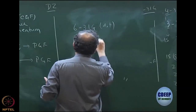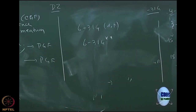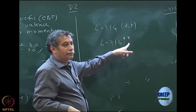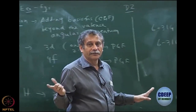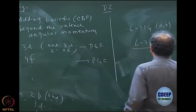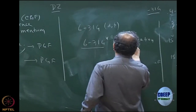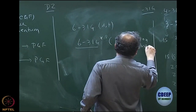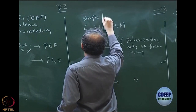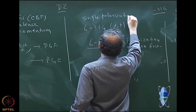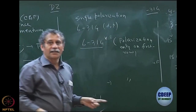This is also often called 6-31G** — many different nomenclatures exist. If I have star-star, it means polarization on carbon and polarization on hydrogen, both. If I have only a single star, it means polarization only on carbon or the first-row atom, not on hydrogen. So you might have seen 6-31G* — that means polarization on carbon only. These basis sets typically have a single polarization function, only on first-row atoms.